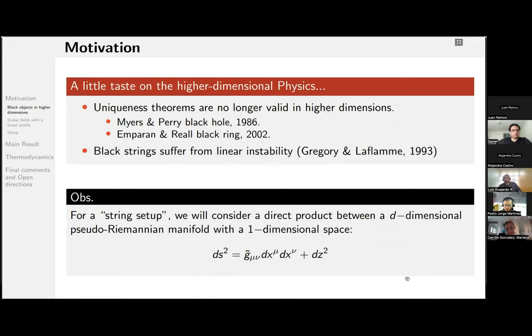So maybe the most iconic example of new physics in higher dimensions is the fact that uniqueness theorems are no longer valid. Examples or counter-examples are the Myers-Perry black hole together with the Emparan-Reall black ring. On the other hand, this is a result from the 90s that black strings suffer from linear instability.